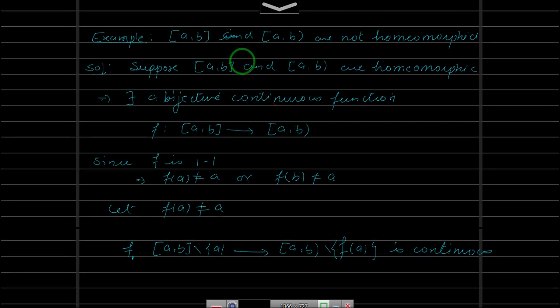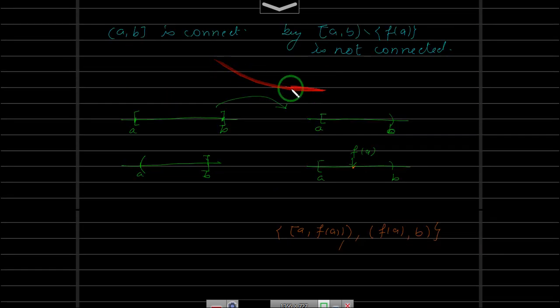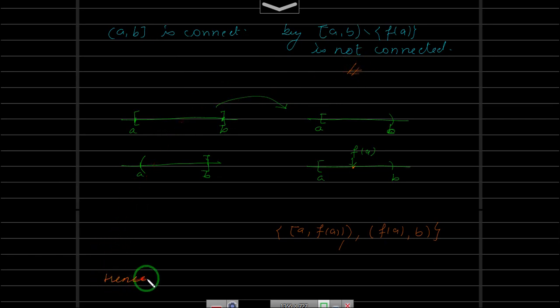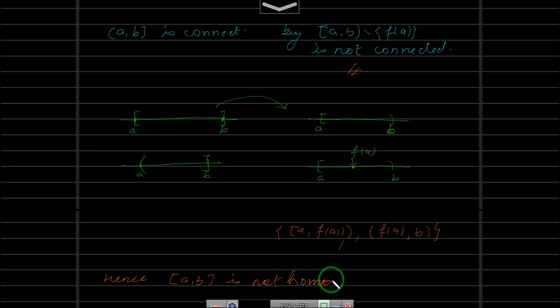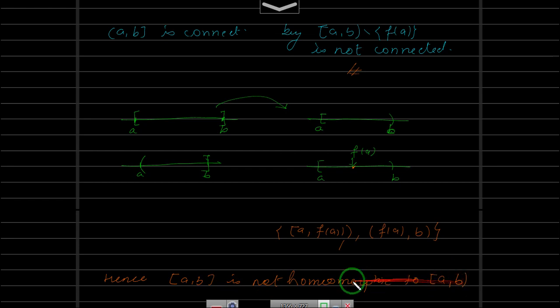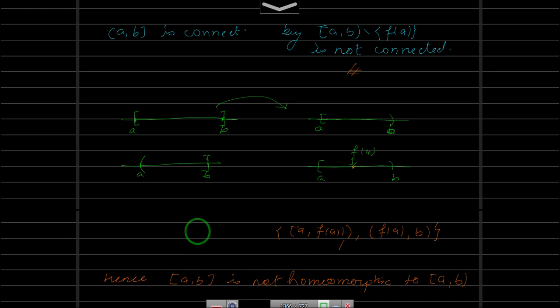This gives us a contradiction. Hence [a,b] is not homeomorphic to [a,b). The same argument applies to any semi-closed, semi-open, open-closed, or other combinations of intervals.